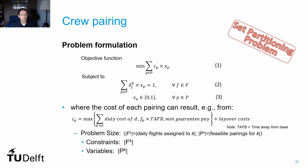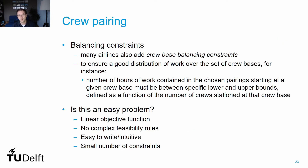In terms of the size of our model, the problem is as large as the number of flights to be covered — one constraint per flight — and the number of pairings — one decision variable per pairing. The standard problem can be extended to consider some specificities from the airline. For instance, for airlines with multiple crew bases, it is common to have balancing constraints in which a good distribution of work over a set of crew bases is enforced, defined as a function of the number of crews located at each base. Do you think this is an easy or a complex problem to solve? It is linear with straightforward constraints, easy to understand, and with a limited number of constraints — as many as the number of flights in the schedule. So where is the complexity, if any? I'll let you think about this.